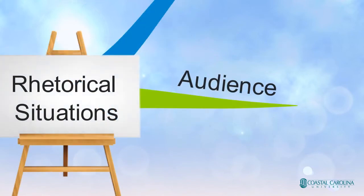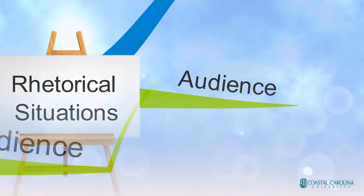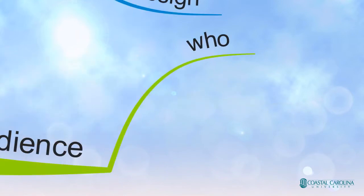So the next part of the rhetorical situation is the audience. And although you are writing, if you're writing in a classroom situation, you might think that your audience is the teacher, it might be a lot of other things as well. So the first question you ask yourself in terms of an audience is, who is my audience? Who am I writing for?